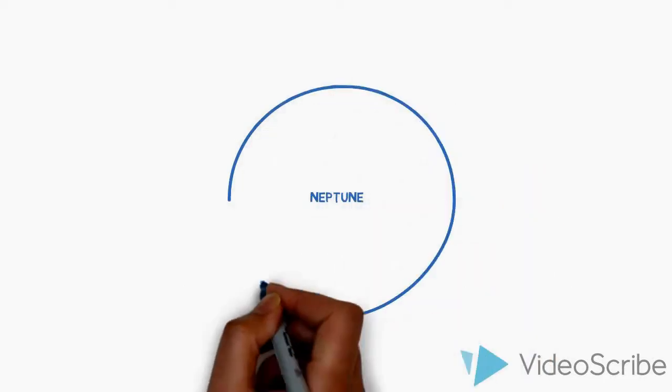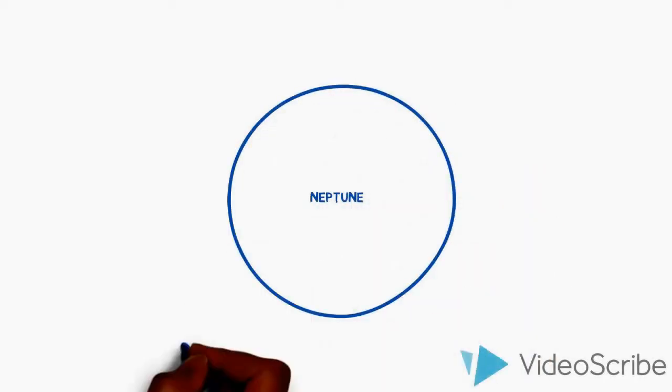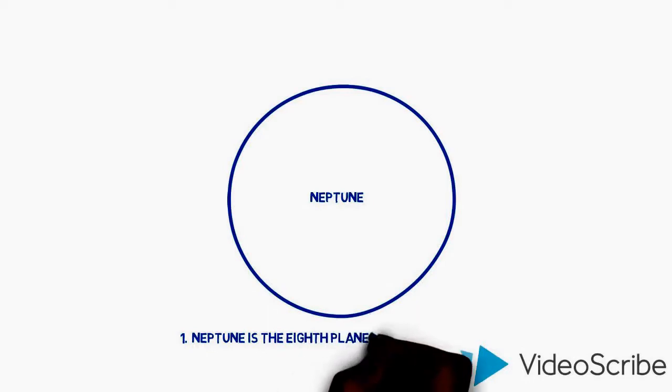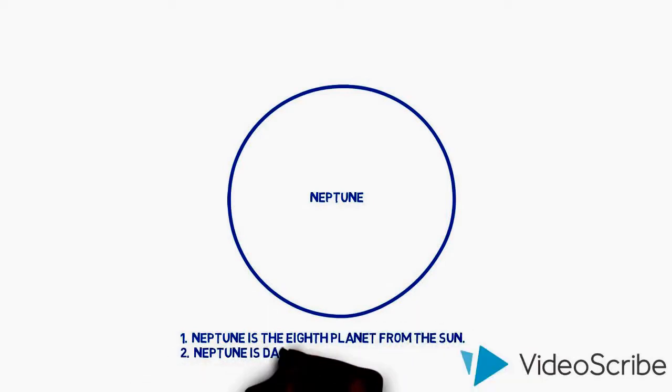Neptune. Neptune is the eighth planet from the Sun. Neptune is dark, cold, and very windy planet. It's the last of the planets in our solar system.